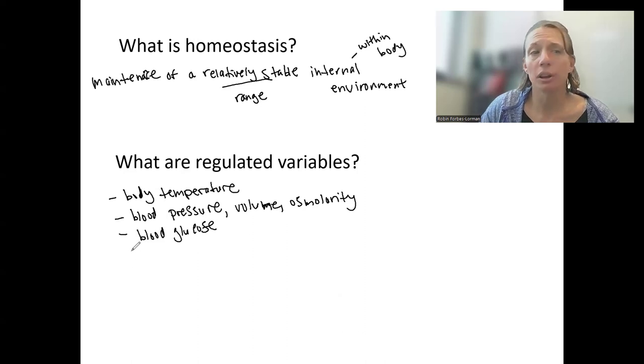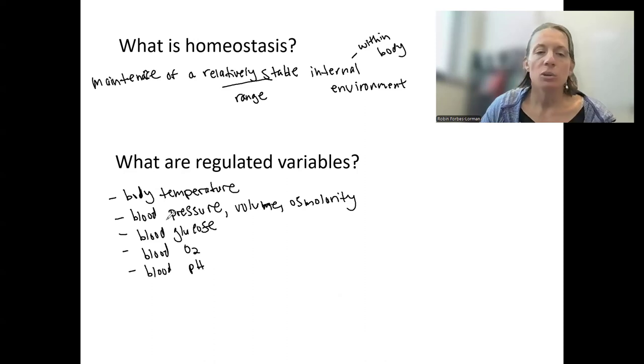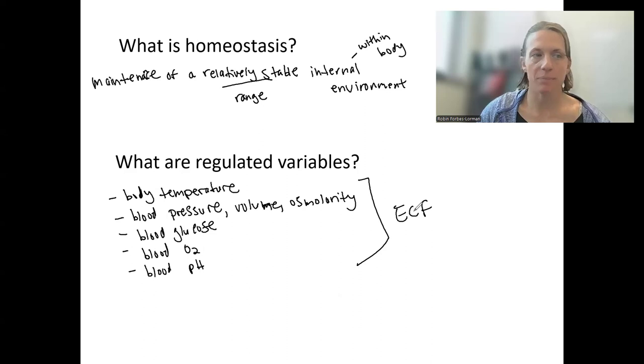Other blood nutrients as well. I'll put separately - oxygen is a very important nutrient. So blood oxygen, blood pH, and many other things. Notice these are pretty much all in the blood. Body temperature actually is within your blood as well. So these are all things that are regulated within the extracellular fluid. Having our extracellular fluid happy helps keep our cells happy.